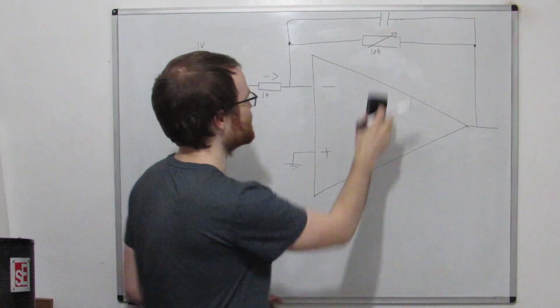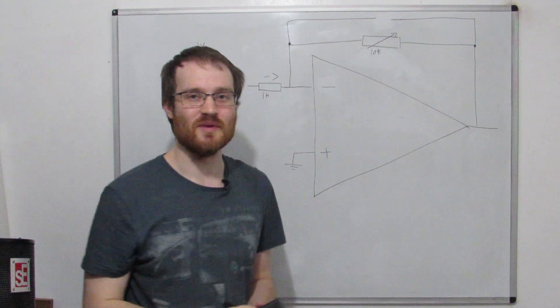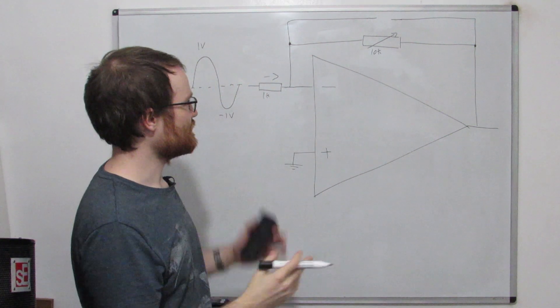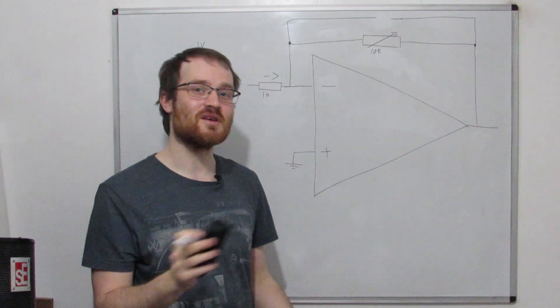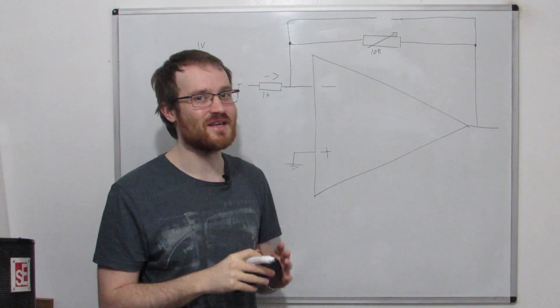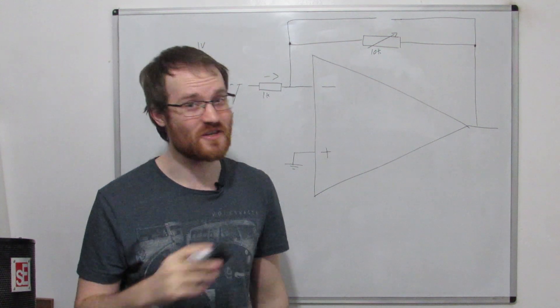Now if you're eagle-eyed you would have seen there's a huge problem with that, because if we change this resistance at low frequencies remember, let's just ignore this because it's an open circuit, now we've got an inverting amplifier, but it's these two resistances that sets the gain.